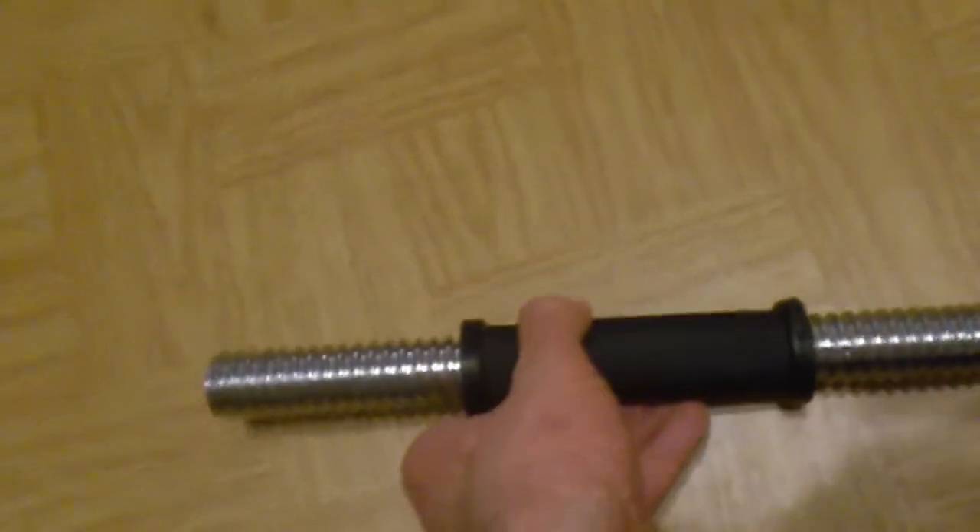Now that grip is okay, but a fatter grip would exercise my forearms for free, because I don't have to do any exercises for my forearms. They get exercised every time I lift that dumbbell, regardless of the exercise I'm doing, whether it's for biceps, triceps, back, whatever. My forearms are getting exercised, and they're getting more exercise the fatter the grip is.